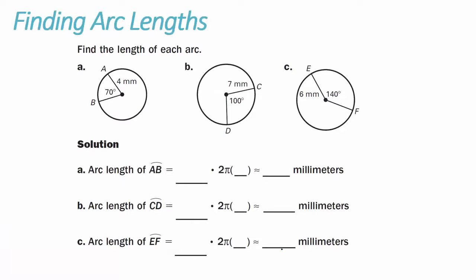Example 2, finding arc lengths — find the length of each arc. In A, the central angle measures 70 degrees, so the measure of arc AB equals 70 degrees. Using part over whole: 70 degrees over 360 degrees times 2 pi R, where the radius is 4. Simplifying and plugging into the calculator gives an arc length of approximately 4.89 millimeters.